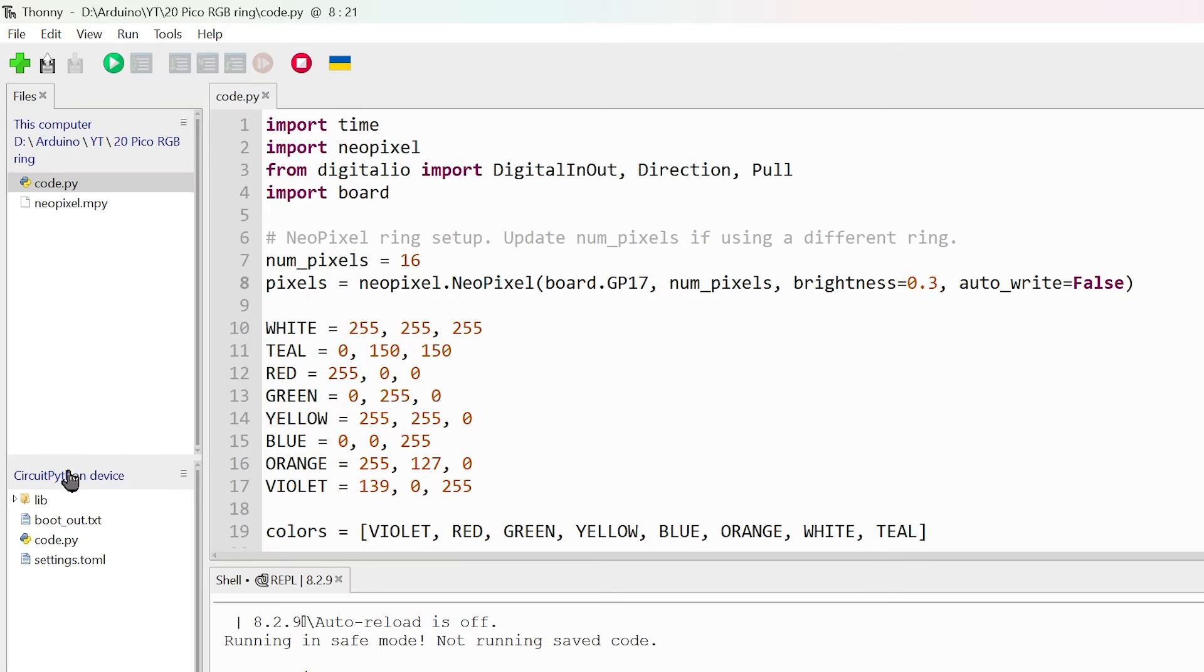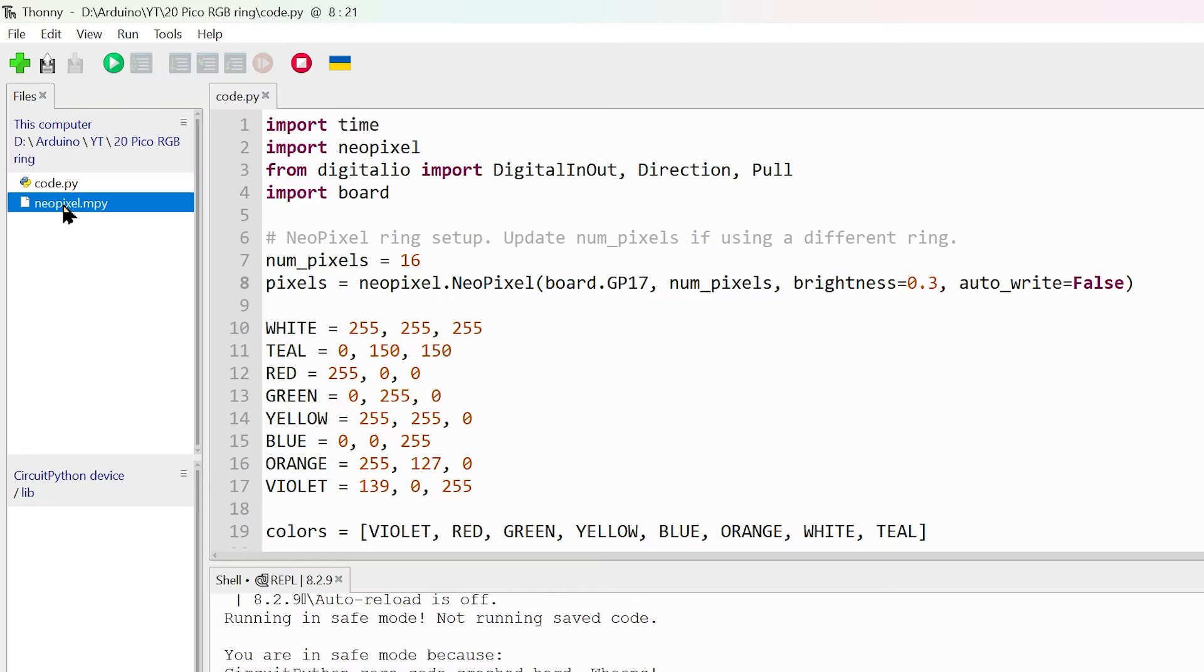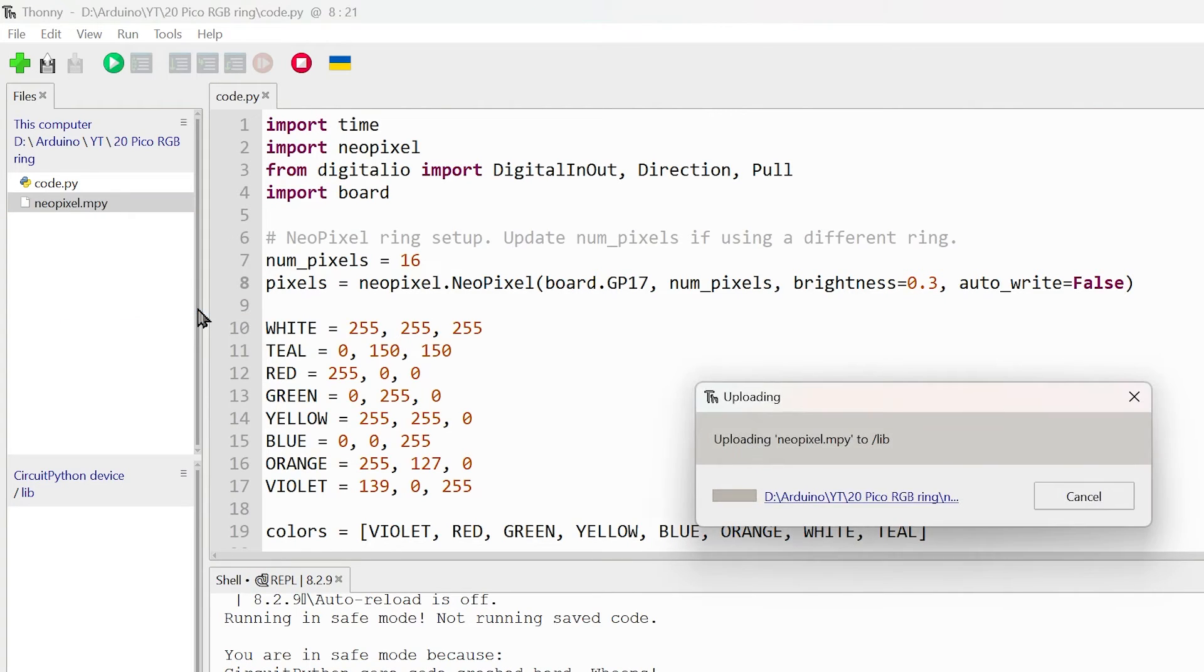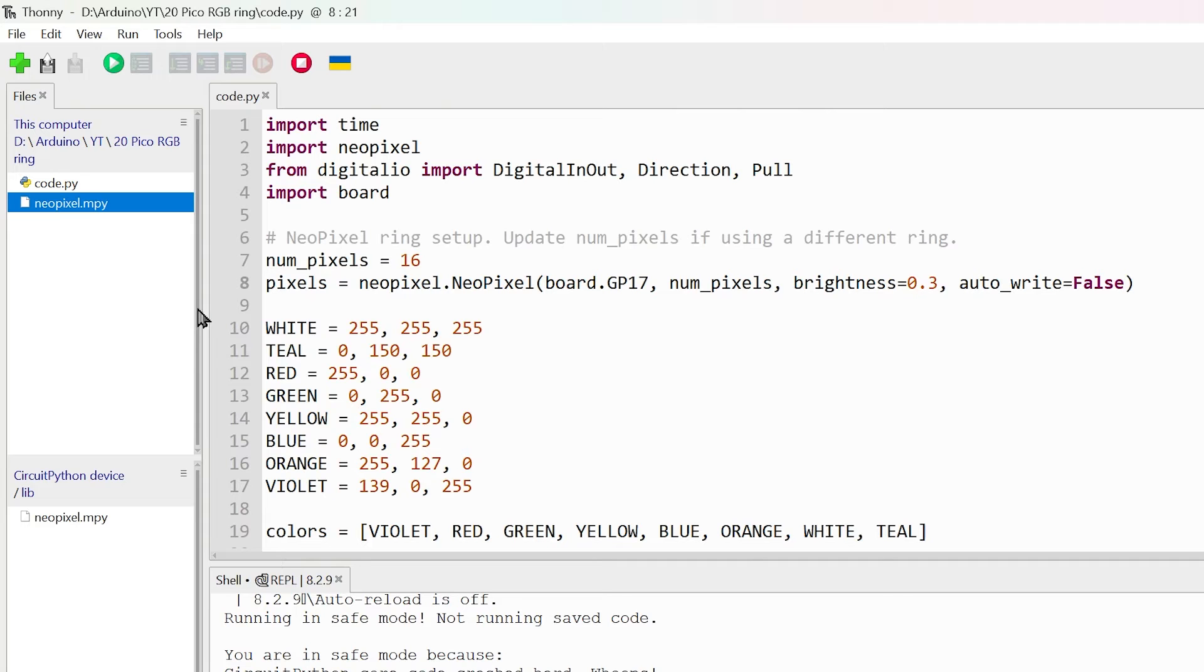Then in the bottom panel, open the lib folder. Select neopixel.mpy, right-click and select 'Upload to lib'. Now reset your Pico and our project should be running.